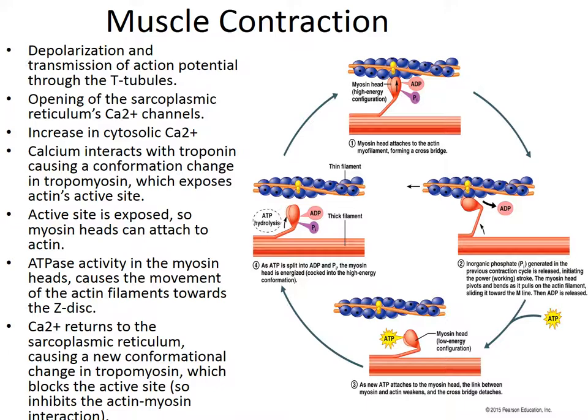When the action potential dissipates, the calcium is reabsorbed back into the terminal cisternae. When this occurs, tropomyosin moves back over the active sites on the G-actin so that crossbridge formation can no longer occur and the muscle relaxes.